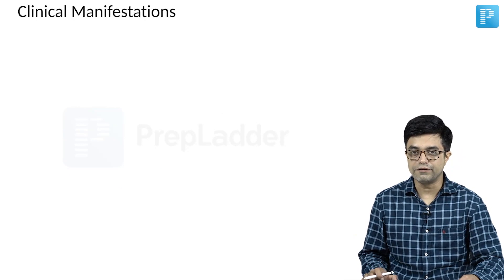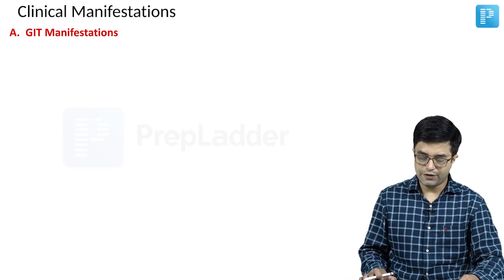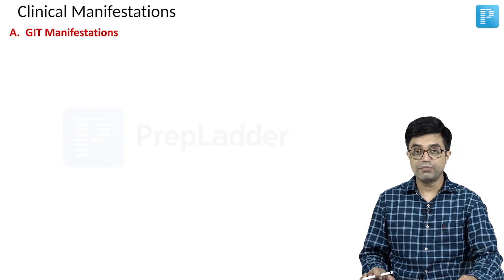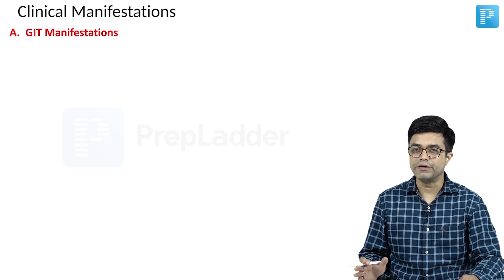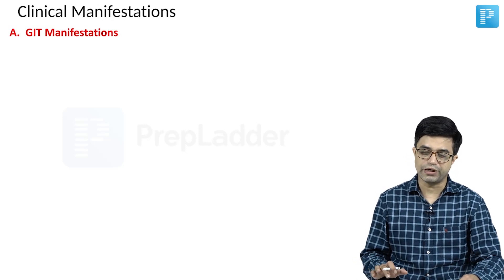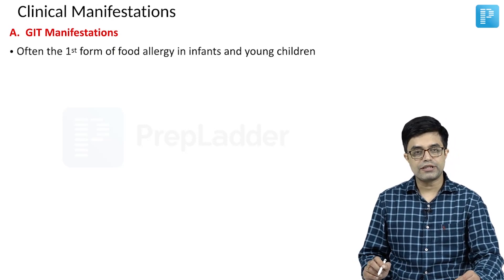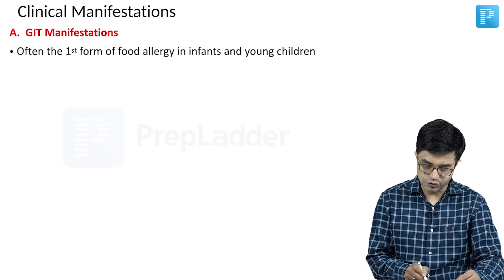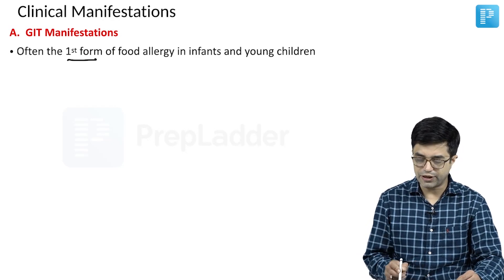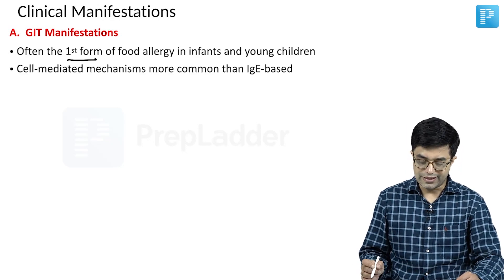Let us move towards the clinical manifestations of food allergies. First, you have the GI manifestations which are the predominant manifestations that we find. Most of the GI manifestations are the first form of food allergy that we find in infants and young children.